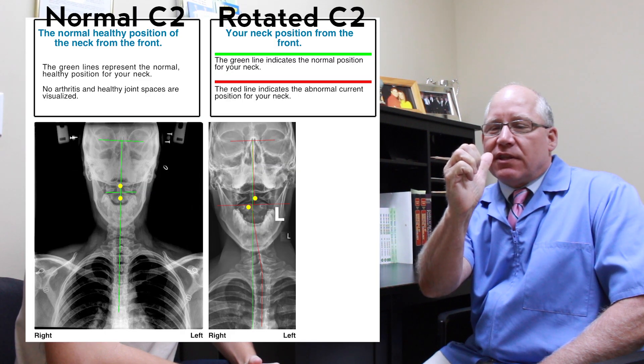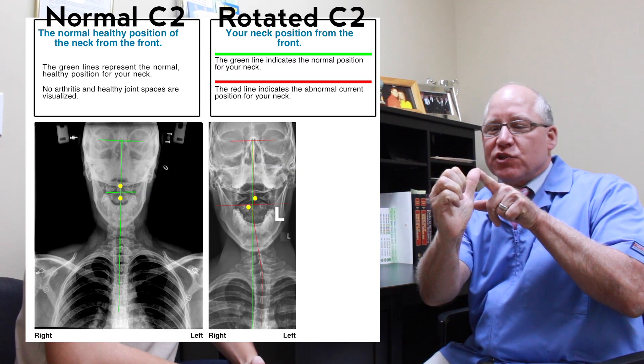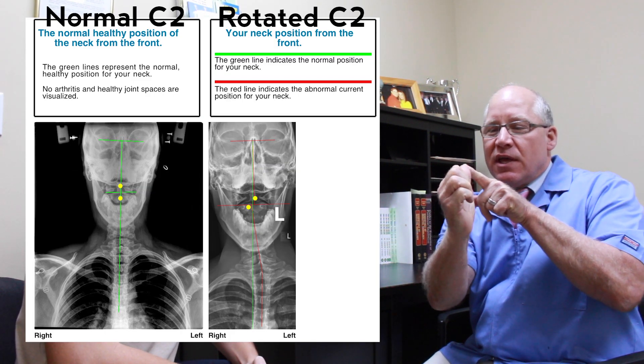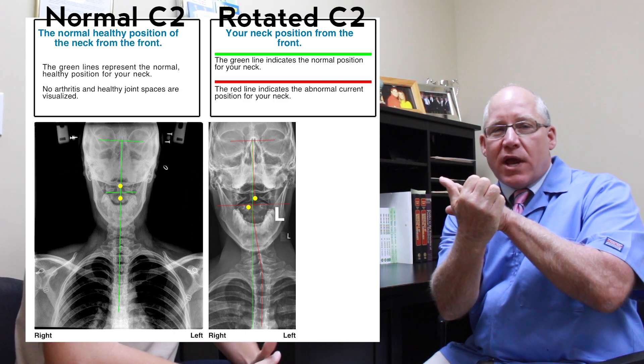On Ben's x-ray, he has a right C2 spinous. So if you look at the x-ray, you'll see that the posterior spinous process on C2 is rotated to the right.